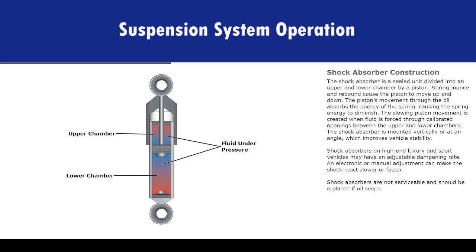The shock absorber is a sealed unit divided into an upper and lower chamber by a piston. Spring jounce and rebound cause the piston to move up and down. The piston's movement through the oil absorbs the energy of the spring, causing the spring energy to diminish. The slowing piston movement is created when fluid is forced through calibrated openings between the upper and lower chambers. The shock absorber is mounted vertically or at an angle, which improves vehicle stability. Shock absorbers on high-end luxury and sport vehicles may have an adjustable dampening rate, allowing electronic or manual adjustment to make the shock react slower or faster. Shock absorbers are not serviceable and should be replaced if oil seeps.